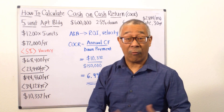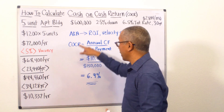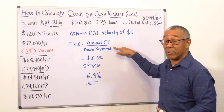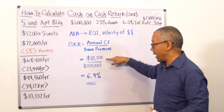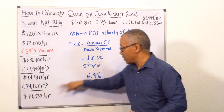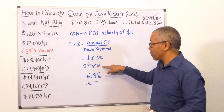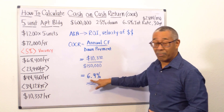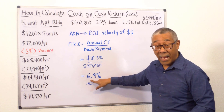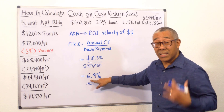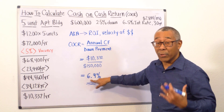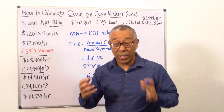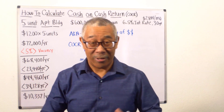Here is the formula for cash on cash return: cash on cash return equals your annual cash flow divided by your down payment. So the annual cash flow of $10,332 divided by $150,000 — which is 25% down — equals 6.9% cash on cash return, or 6.9% ROI, return on investment. That is how you calculate cash on cash return.